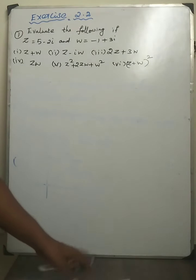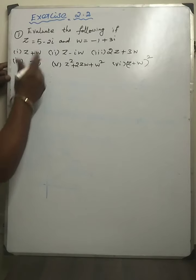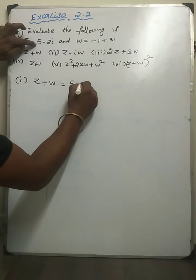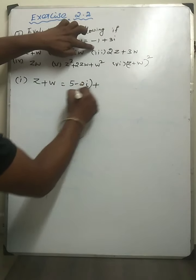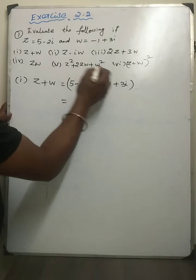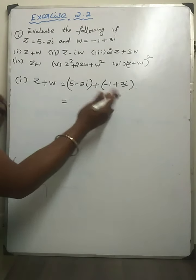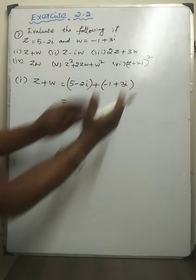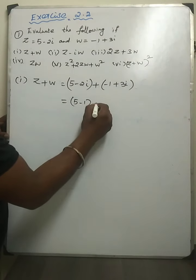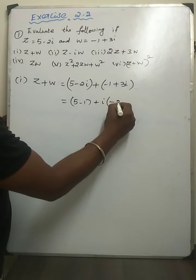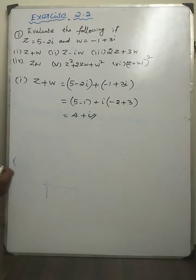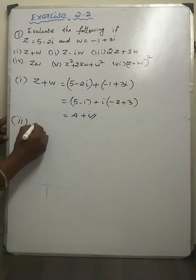First subdivision: z plus w. z is equal to 5 minus 2i, and w is equal to minus 1 plus 3i. To add, real part plus real part, imaginary part plus imaginary part. So 5 plus minus 1 gives 4, and minus 2 plus 3 gives 1. The answer is 4 plus i.